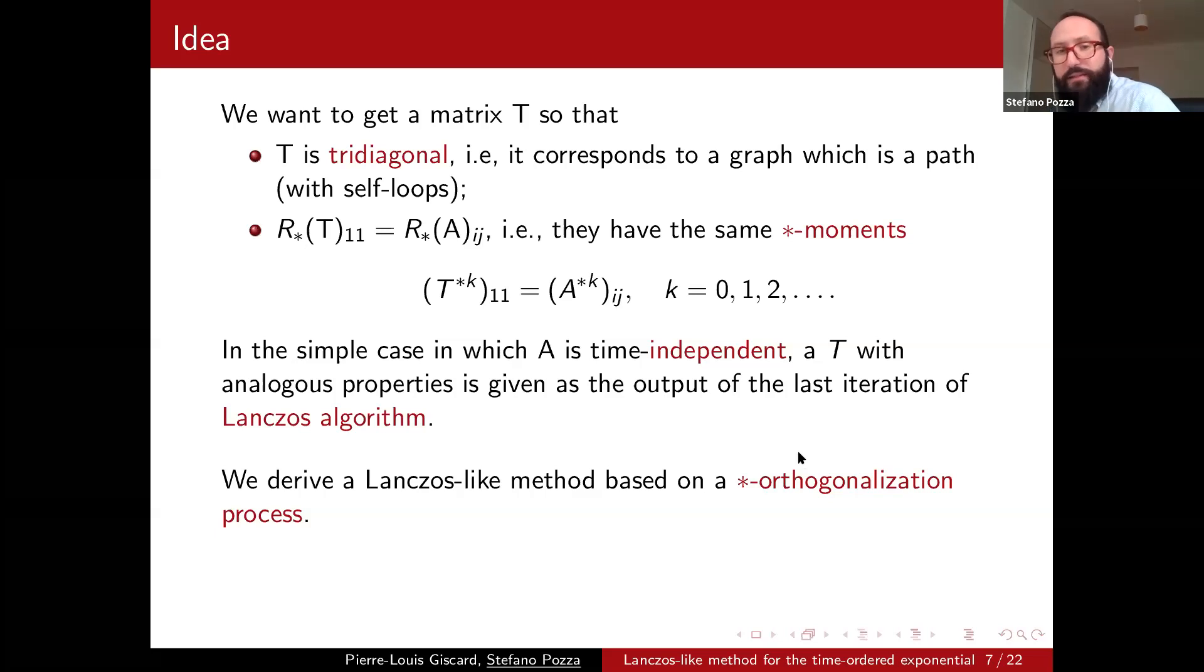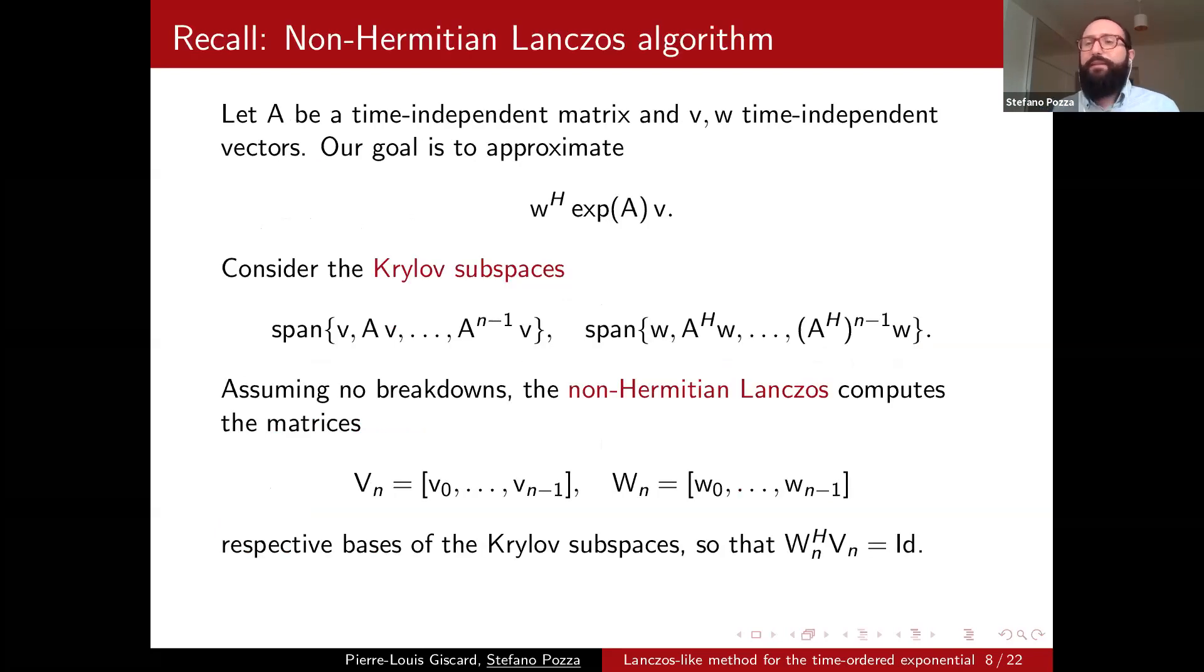But this can be rewritten just using the definition of star resolvent in this way. So we have these star powers of the two matrices must be the same in these elements and these are known, we define them as star moments. So this is what we want to build. And if you are familiar with some similar problem, moment problem, probably you would have noticed that in the case in which A is time-independent, in the classical case, this can be done using Lanczos algorithm. So what we are going to do is using this analogy to solve this problem with respect to the star product.